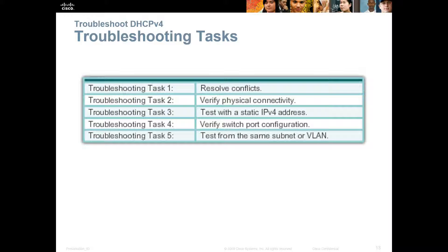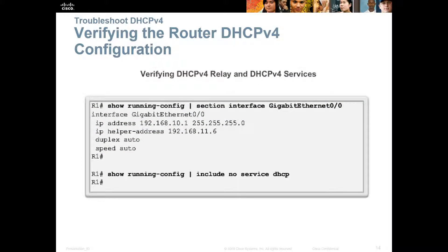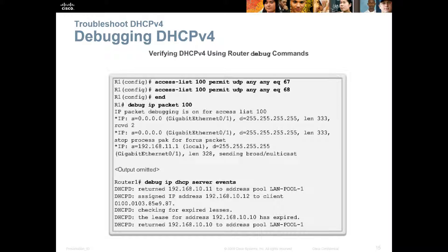For troubleshooting: Task 1 — resolve any conflicts, verify connectivity, test with a static address to confirm, verify the appropriate switch ports, and verify from the same VLAN or subnet. You can always use the appropriate show commands to verify routing and DHCP configuration, and debugging DHCP version 4 is always an option.